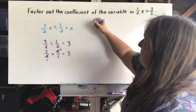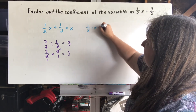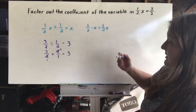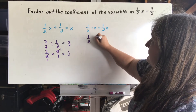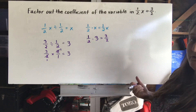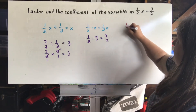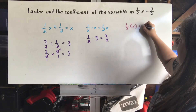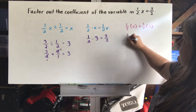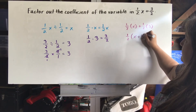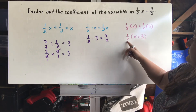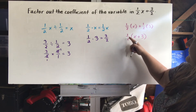So I'm going to rewrite them as a product of factors: 1 half times x gives the term 1 half x, and 1 half times 3 gives the term 3 over 2. Using the distributive property, I put the 1 half out front and write x plus 3 inside. So my factored expression is 1 half times (x plus 3). If I wanted to go back to the original, I'd multiply the 1 half back in to get 1 half x and 3 over 2.